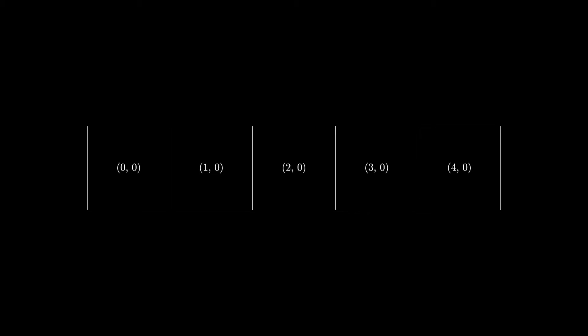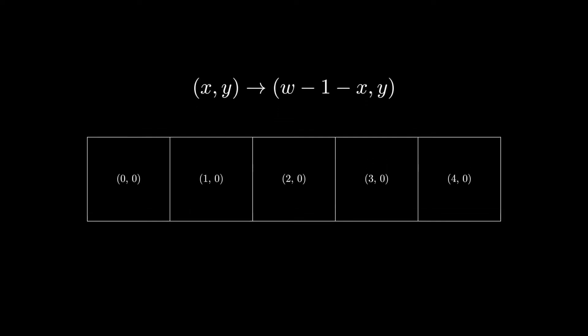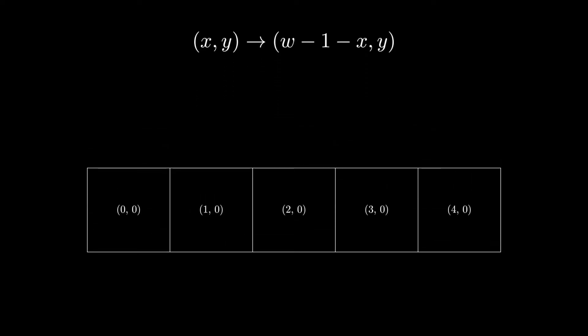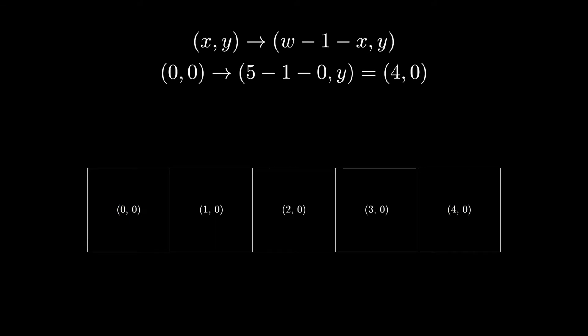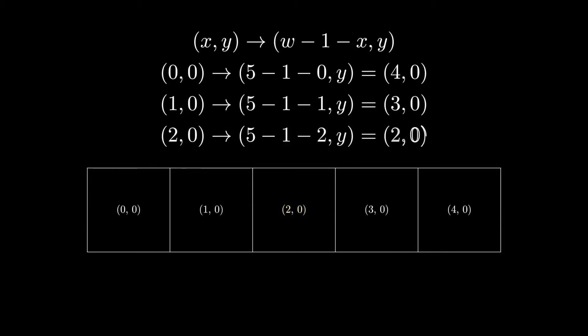If we have one row of the image, we're going to use this little formula to figure out which pixel on the right side we want to swap with. If we look at just this row and follow that formula, we can see for our edge points we're going to map (0,0) to (4,0), then (1,0) to (3,0), and finally (2,0) which maps to itself using this formula. The formula is just width minus one minus x.